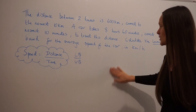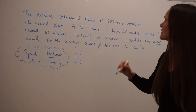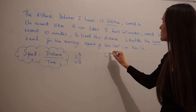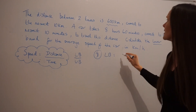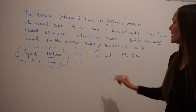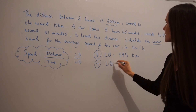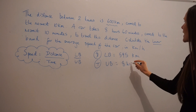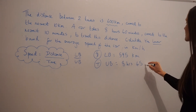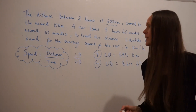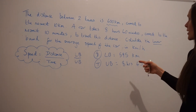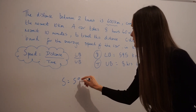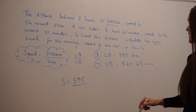So I need to take the lower bound for the distance. The distance is 600 kilometres, and it was rounded correct to the nearest 10 kilometres. So the lower bound for distance is 595 kilometres. And then for time, we're taking the upper bound. The time was 8 hours 40 minutes correct to the nearest 10 minutes. So the upper bound would be 8 hours and 45 minutes. So I've got my lower bound for distance and upper bound for time. Now I substitute distance and time into the formula — the distance is 595 and the time is 8 hours and 45 minutes.